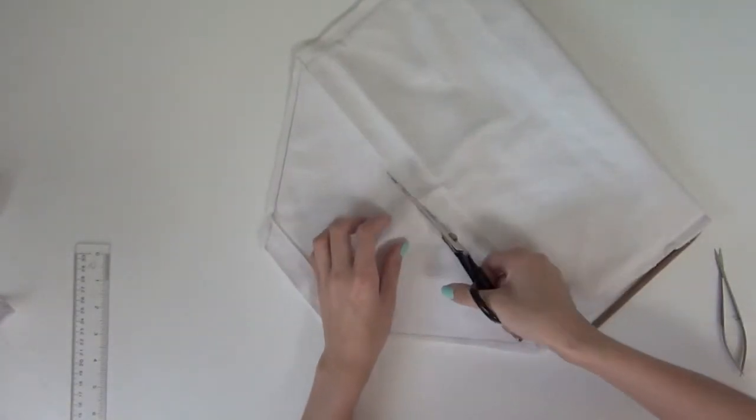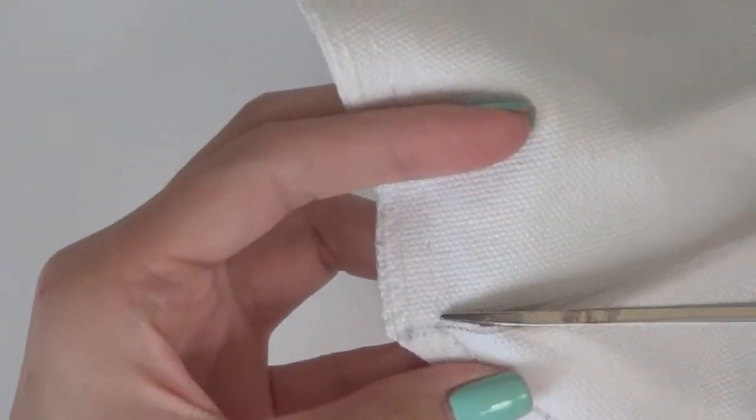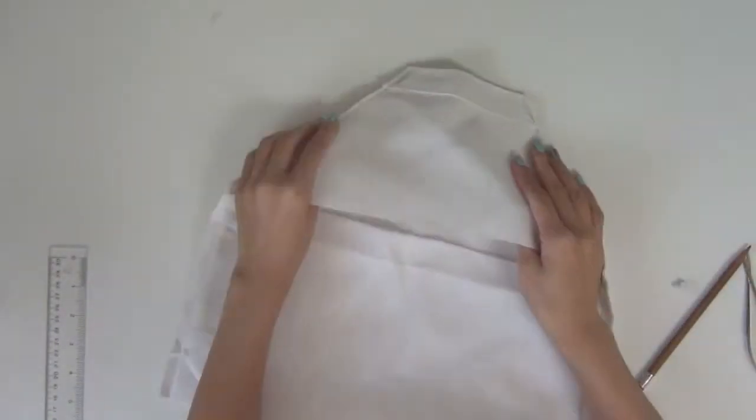And here you could see it's already turning into a clutch, right? And so at each side of the clutch, I cut down a little bit because soon you see that I'm going to create a completely finished seam. No raw edge will be shown.